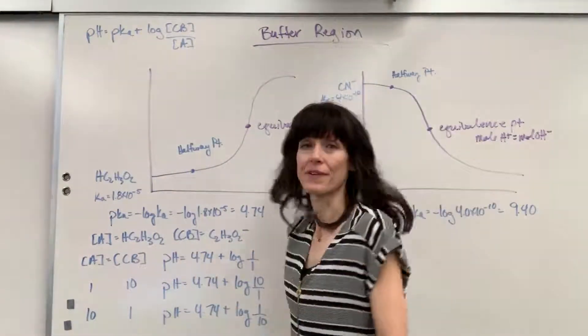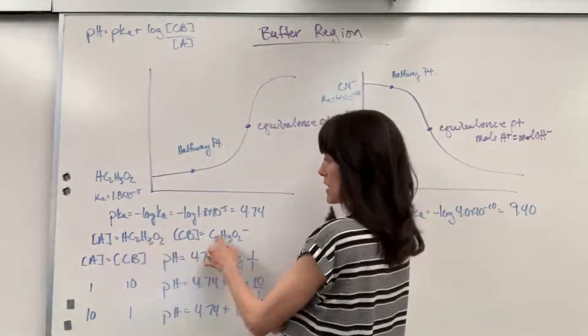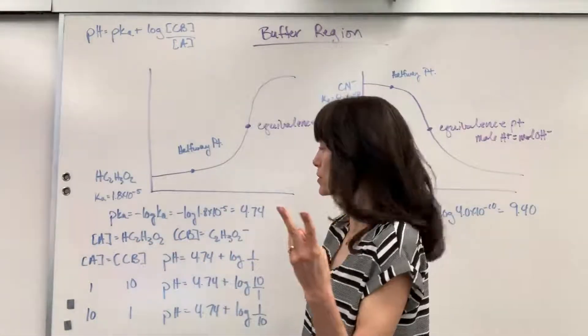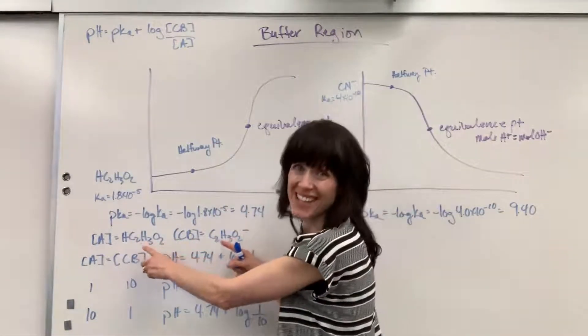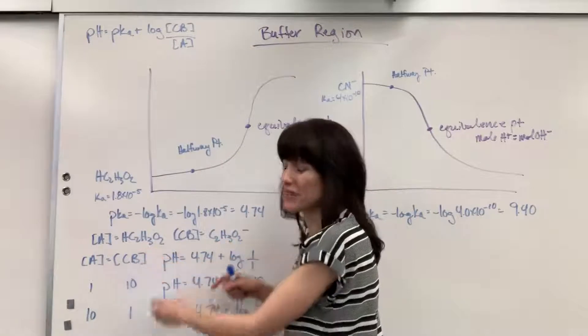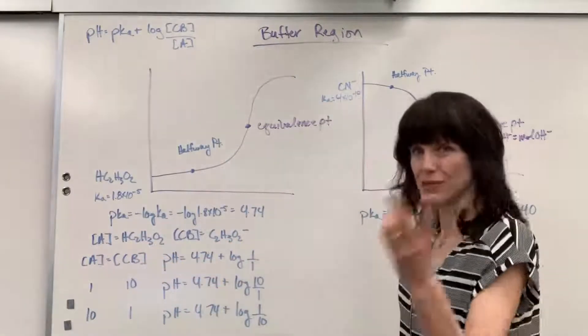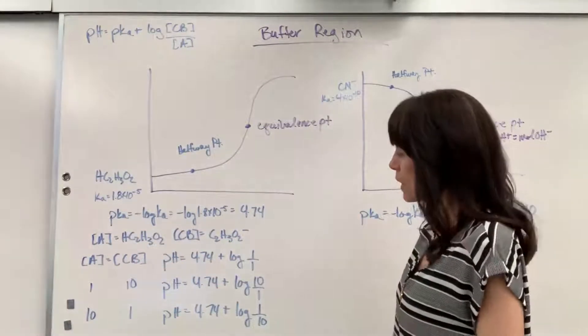The reason why this is the buffer is that one is an acid and one is a base — criteria number one. And number two, those don't react together. That fulfills our second criteria.